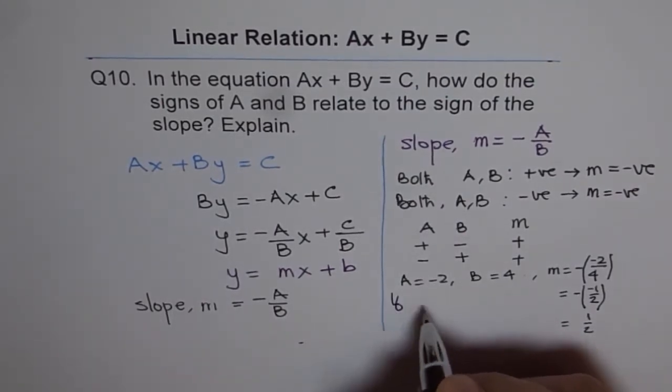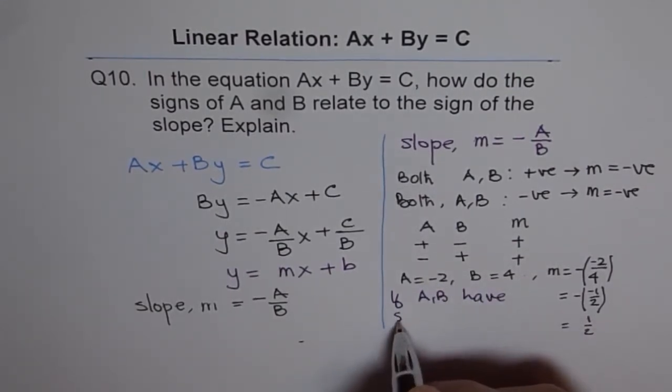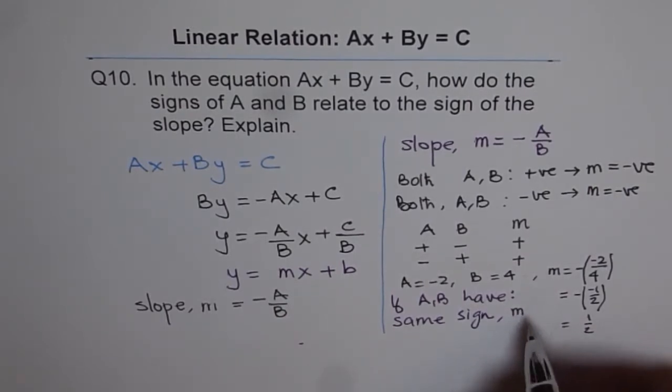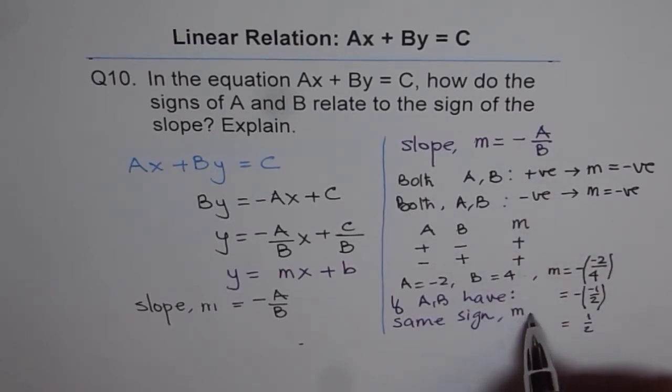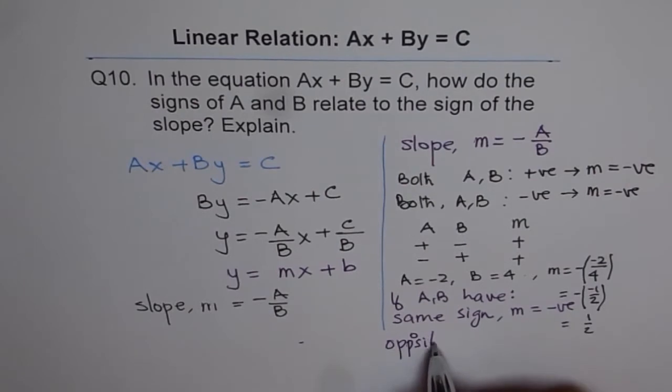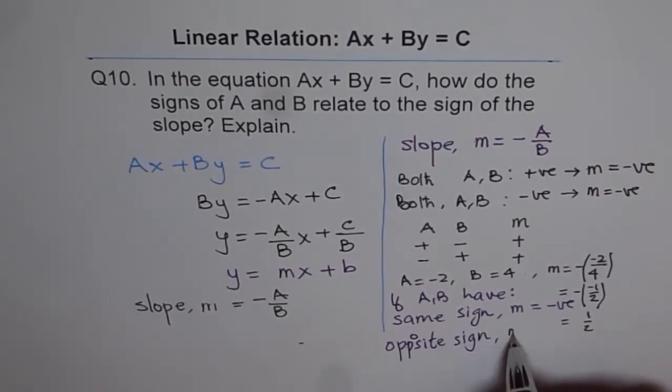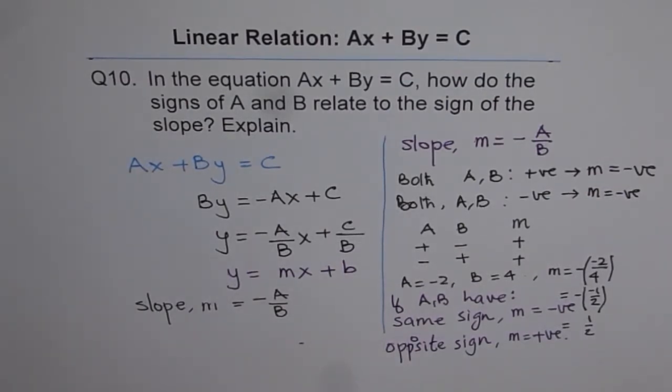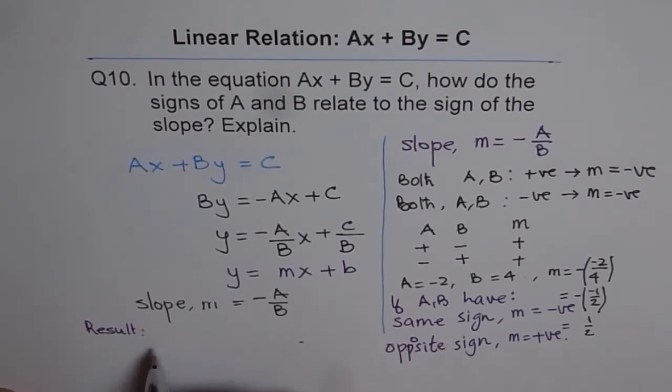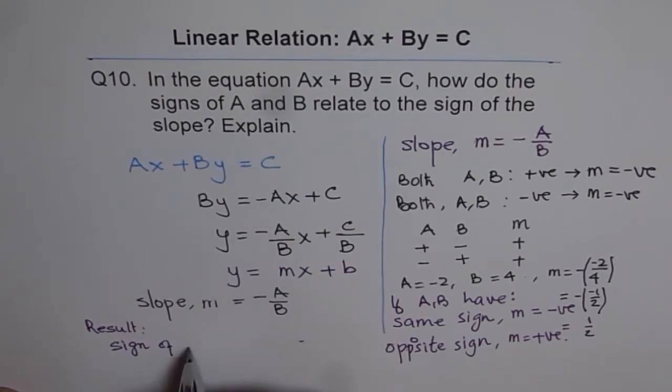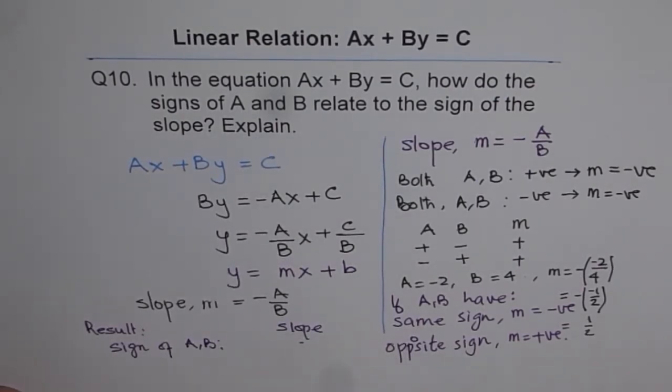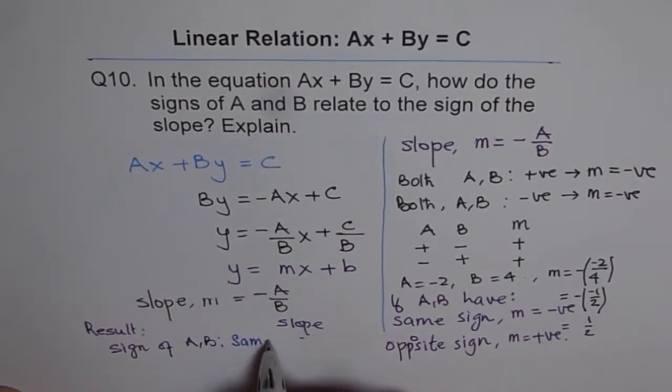If A and B have same sign, then M is, if they have same sign, their signs will cancel off, you get negative. So, M is negative. But, if they have opposite signs, in that case, M will be positive. That is how we can summarize this. Let's write it down here. Our conclusion is, we'll write, sign of A and B, and slope here. If the sign is same, then the slope is negative.